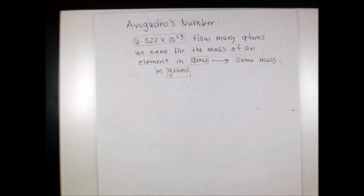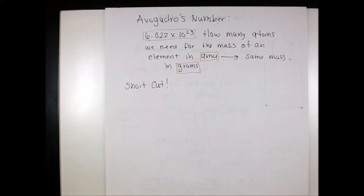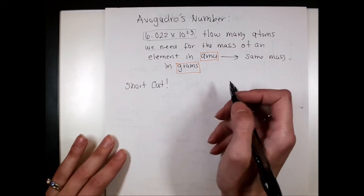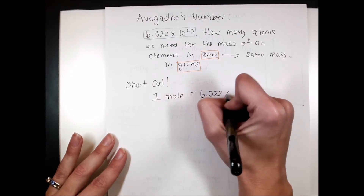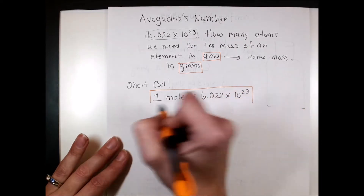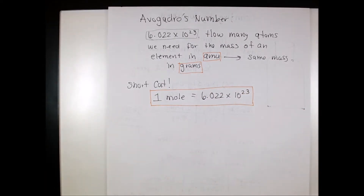Who wants to type Avogadro's number into their calculator every single day? That's why there's a shortcut — and that shortcut is the mole. We'll be dealing with quantities of atoms for the entire rest of the semester: how many atoms, how many molecules, how reactions occur, how compounds form. One mole equals Avogadro's number — 6.02 times 10 to the 23rd.